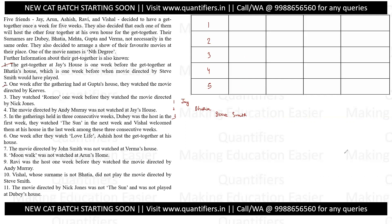Second clue: one week after the gathering at Gupta's house, the movie directed by Keeps was played. They watched Romeo one week before they watched the movie directed by Nick Jones. The movie directed by Andy Murray was not played at Jay's house, so Jay did not let the movie directed by Andy Murray be played.